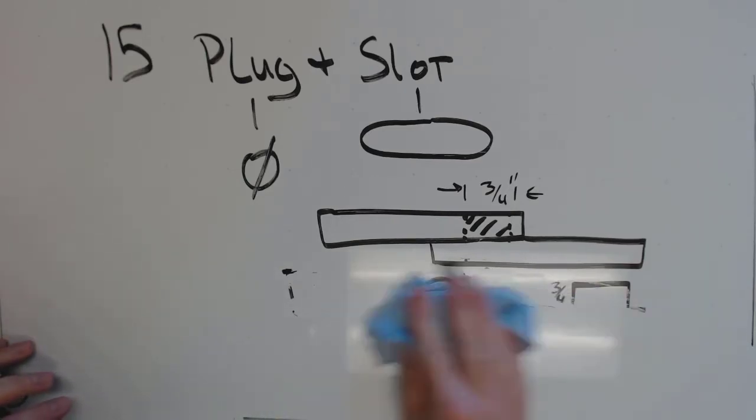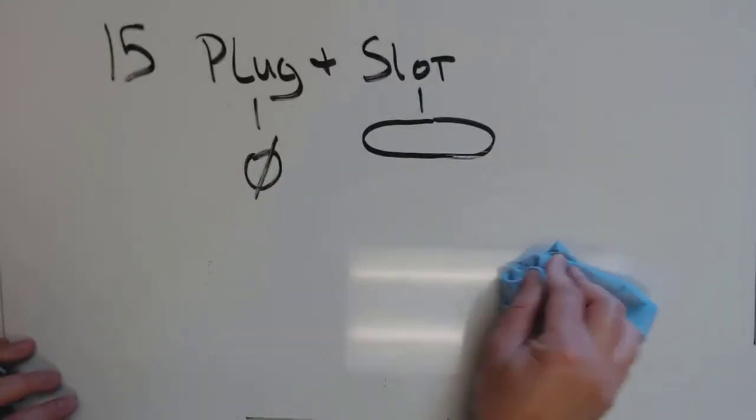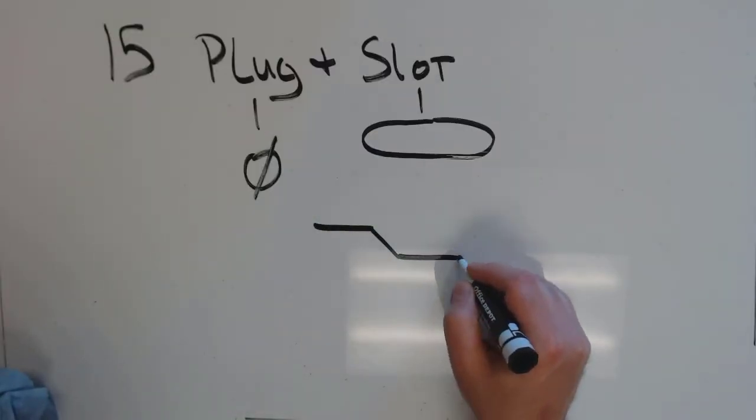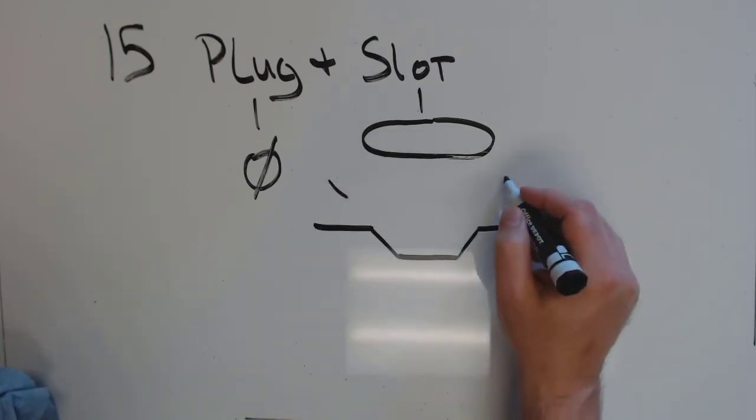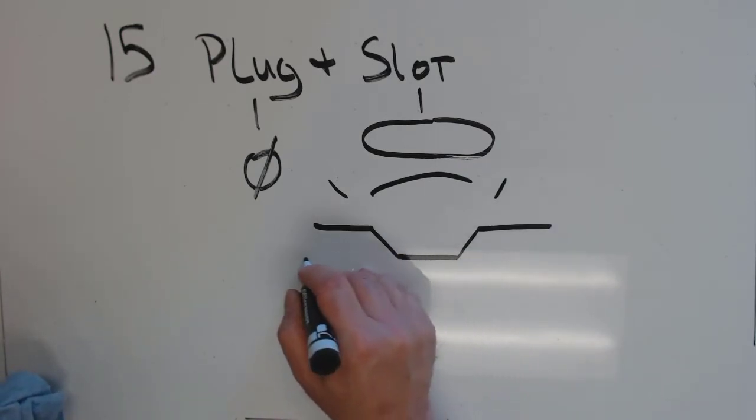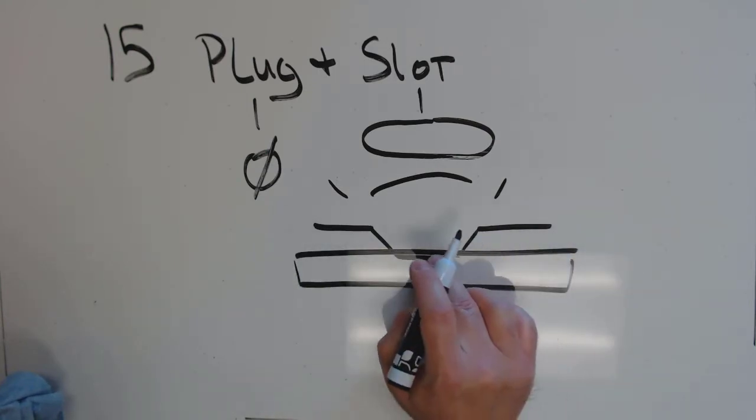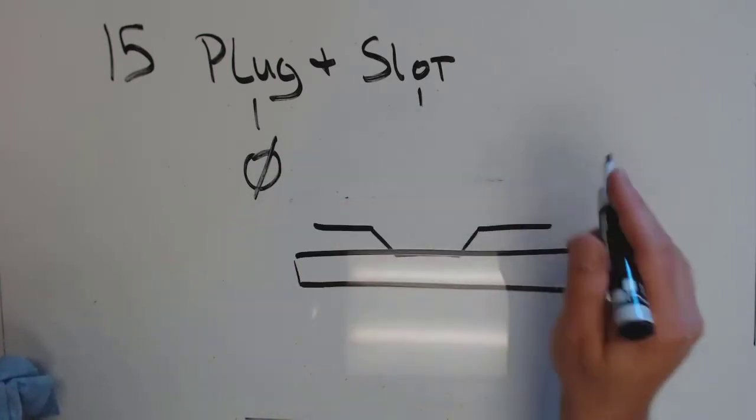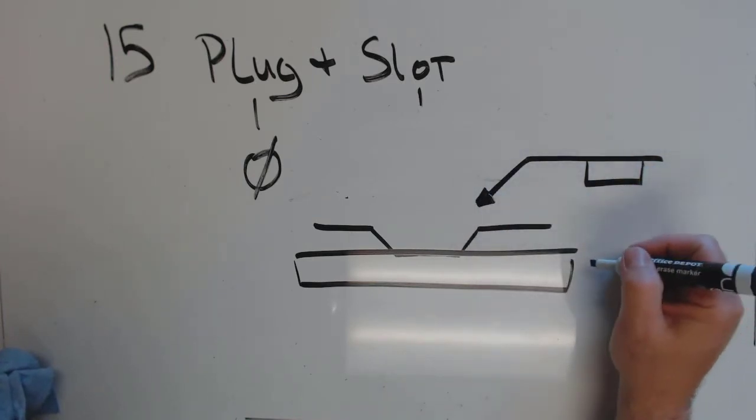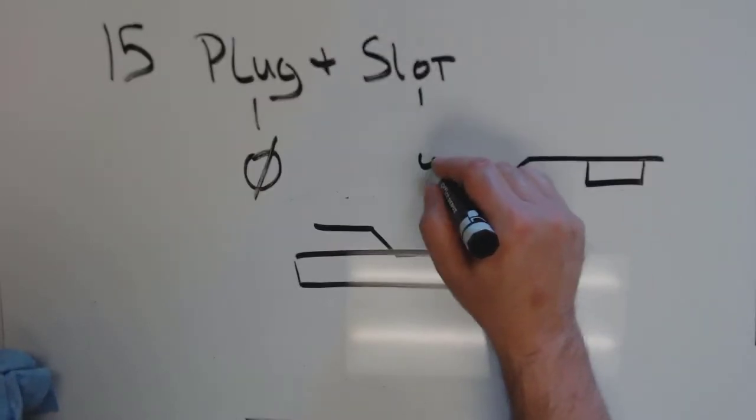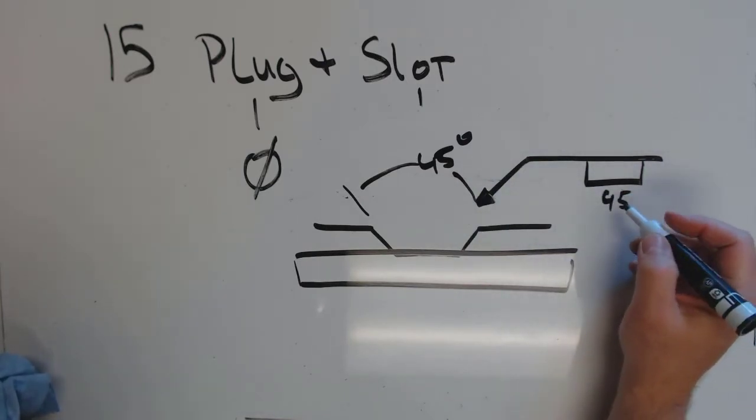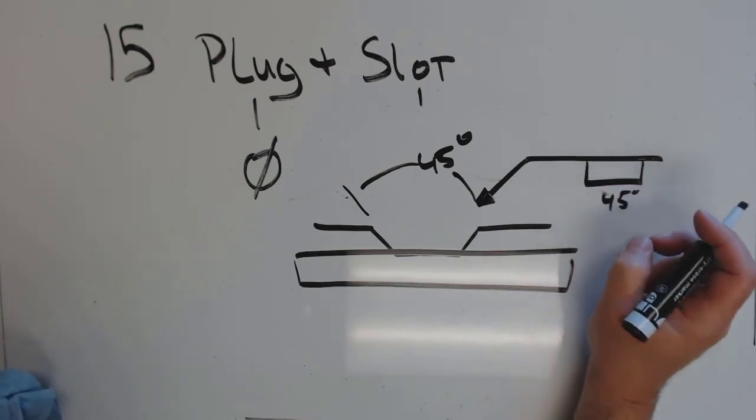Another thing about plugs and slot welds is they may not be straight-sided. In some cases, they'll have a countersink to them. So your hole will be shaped like this and we'll have an included angle just like groove weld does. And if that is what we're going to do, if that's what we're going to do, our weld symbol is going to tell us that. So it's arrow side, so it's on the bottom. I've got my plug weld. And then, if this is going to be 45 degrees, I'm going to put a 45 degree right there. And that will tell me that it's got a bevel to it.